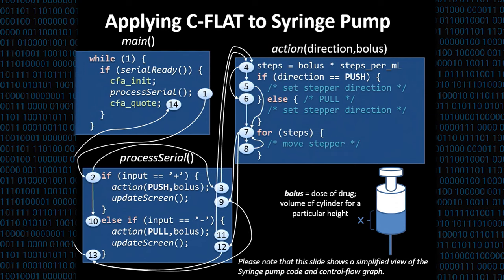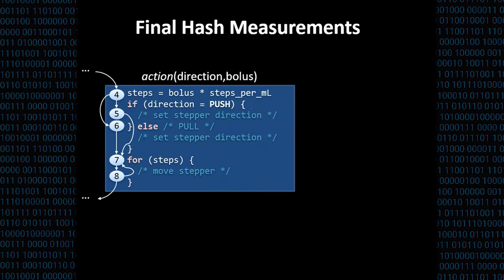The resulting control flow graph looks kind of like this. And if we in particular look at the action function, then it is structured as follows. We first receive the bolus, which is the dose of drug. We translate the bolus to motor steps. Then we check the direction. And finally, we have a loop that moves the motor stepper according to the direction that has been set before.